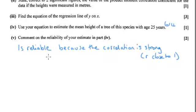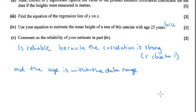So because the correlation is strong and the age is within the data range, that's probably all we need to put for part 5.